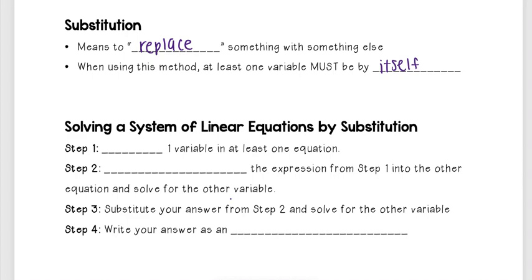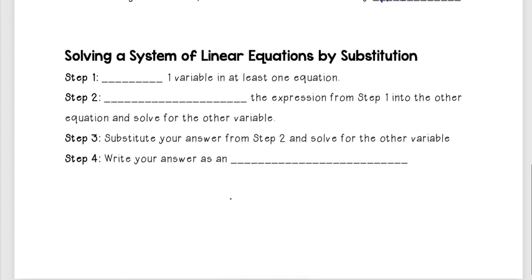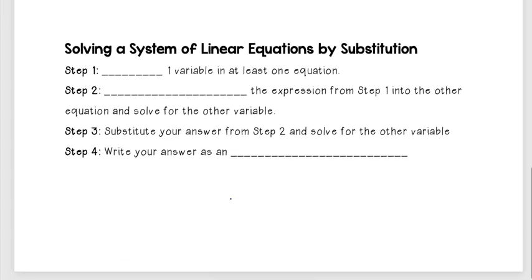And so the steps that we're going to follow on the next few videos are basically these four steps. First, step one, we are going to isolate one variable in at least one equation. So that means, say, we want to isolate x.